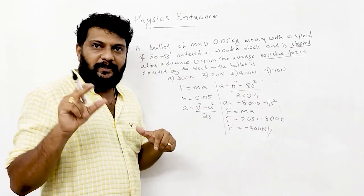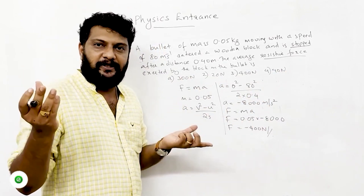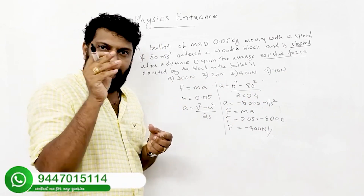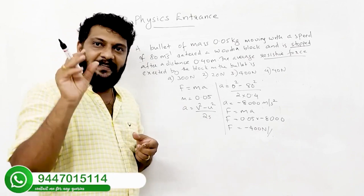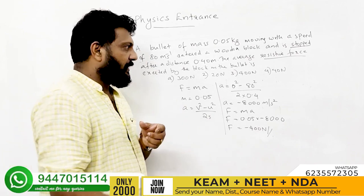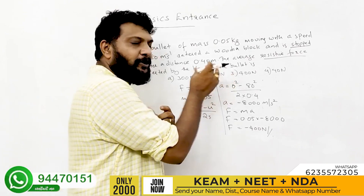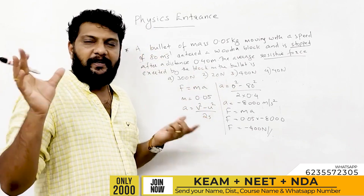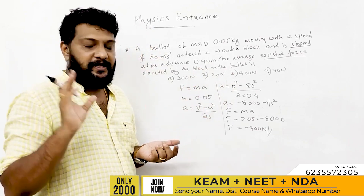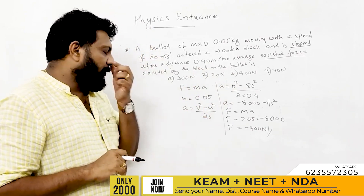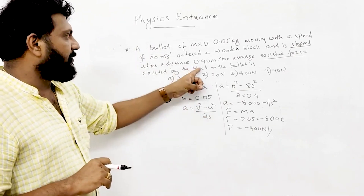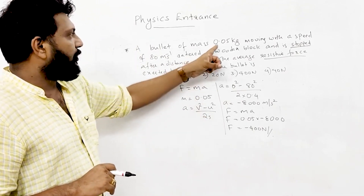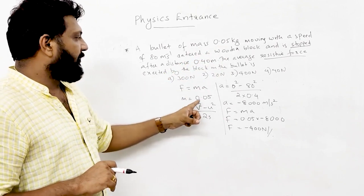If we compute the resistive force we get a negative value, but we take the magnitude. Given: s = 0.40 m, m = 0.05 kg.